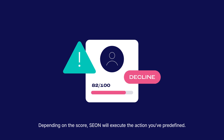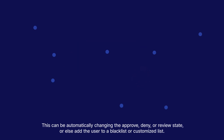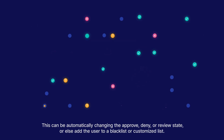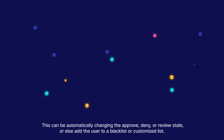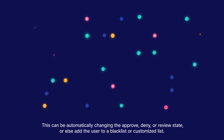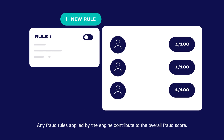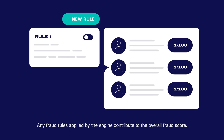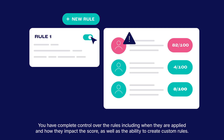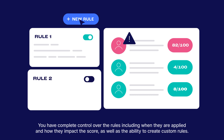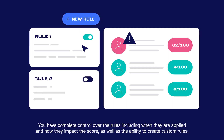Depending on the score, Sion will execute the action you've predefined. This can be automatically changing the approve, deny, or review state, or adding the user to a blacklist or customized list. Any fraud rules applied by the engine contribute to the overall fraud score. You have complete control over the rules, including when they are applied and how they impact the score, as well as the ability to create custom rules.